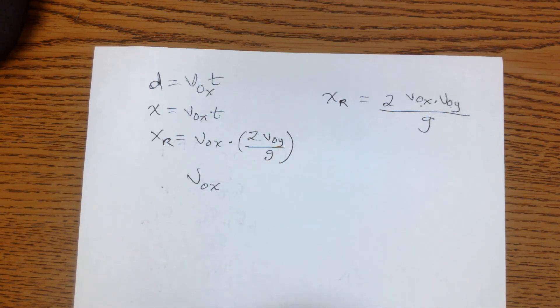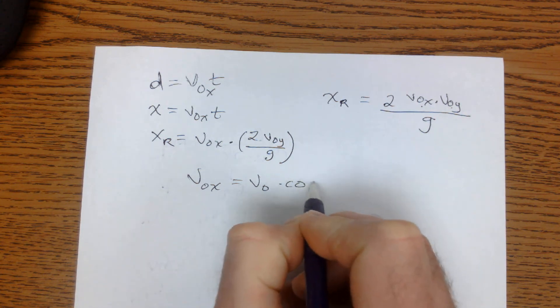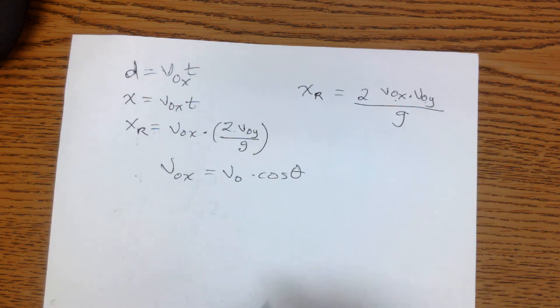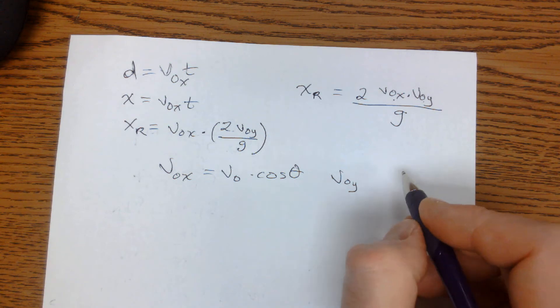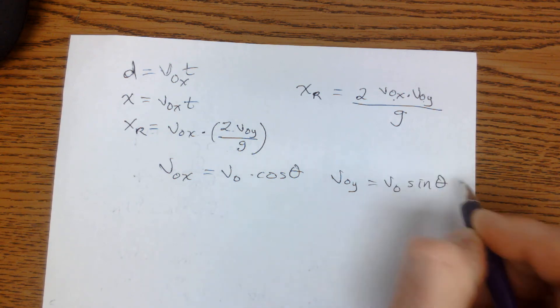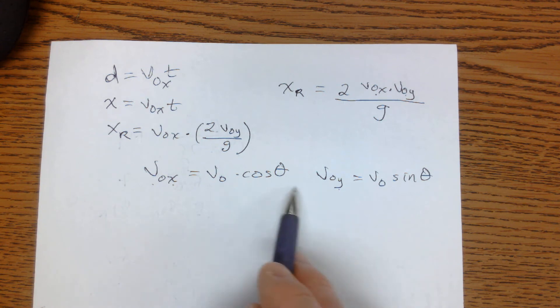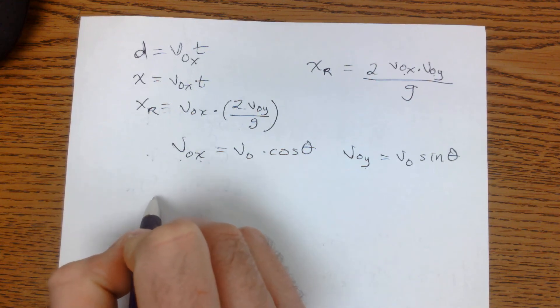So we know the initial velocity in the x direction is equal to the initial velocity times the cosine of theta. So in our formulas, anywhere where we see this v0x or v0y, we can substitute in these terms we've got here. So let's go ahead and just use that range formula.